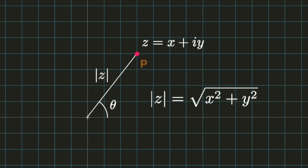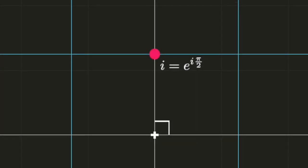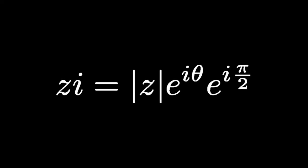It's customary to denote the distance r as the absolute value of z, and it's easy to see from the Pythagorean theorem that the absolute value of z is equal to the square root of x squared plus y squared. Notice that this polar representation of complex numbers makes it easy to derive the identity i equals e to the i pi over 2. And multiplication of a complex number by i corresponds to rotating the point p by 90 degrees around the origin.